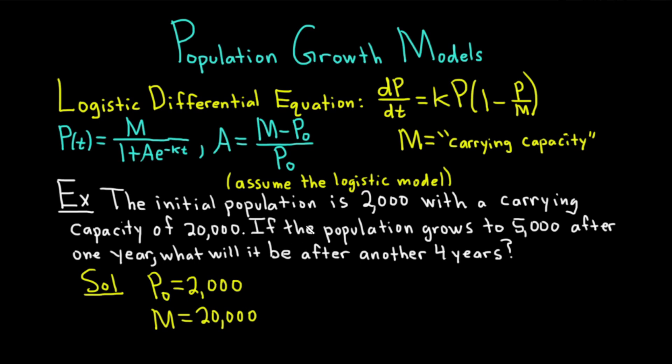We're assuming the logistic model, and we want to know what the population will be after another four years. We have to use the function P(t) here in blue, which gives us the population at a particular point in time. So we have M, we just need A.